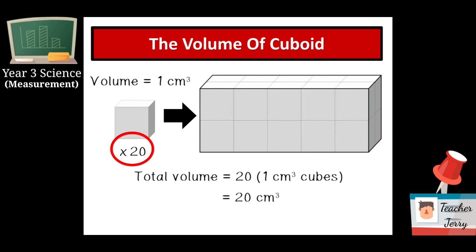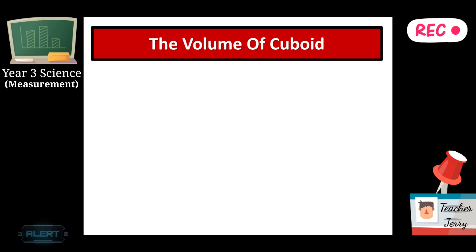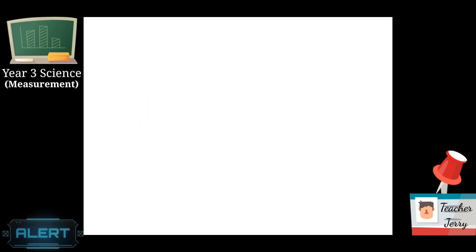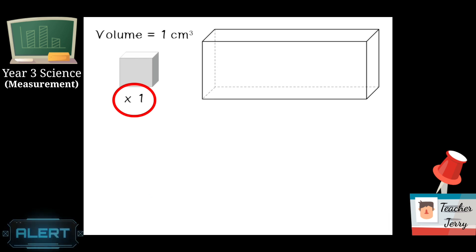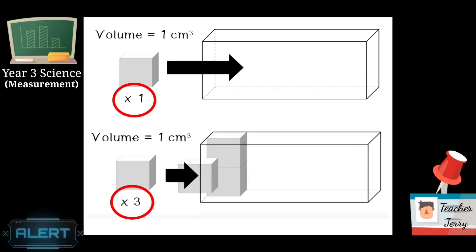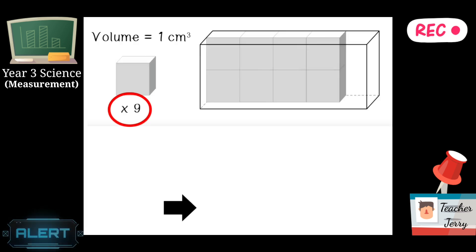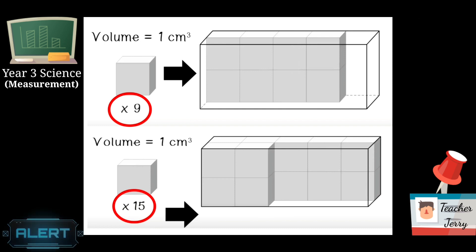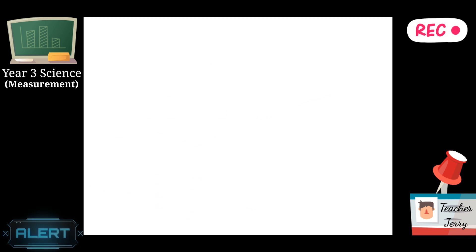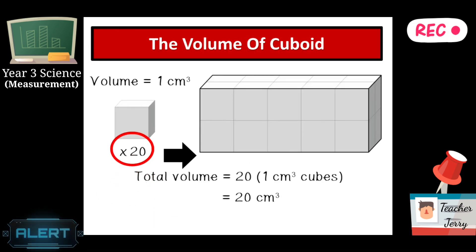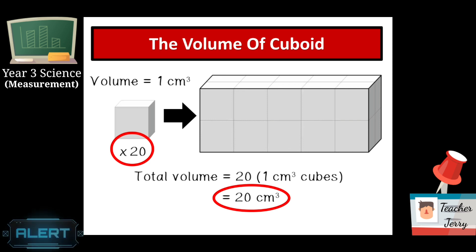Let me repeat again. For a cuboid, the first step is we use a cube with one cubic centimeter and fulfill it into the cuboid one by one - one, two, three, four, five, six, seven, eight, nine, ten, eleven, twelve, thirteen, fourteen, fifteen, sixteen, seventeen, eighteen, nineteen, and twenty. So lastly we get twenty cubes inside the cuboid, so the conclusion is we get twenty cubic centimeters.